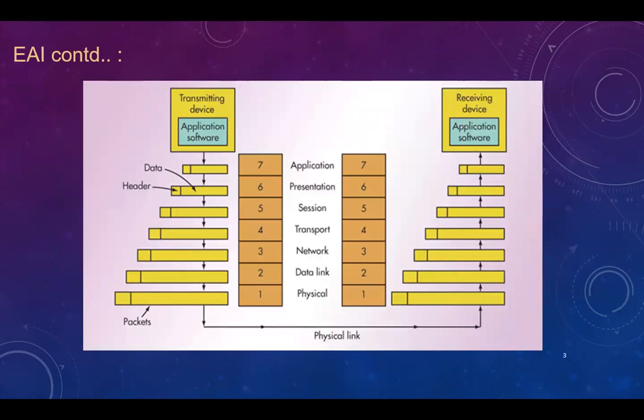Whenever we want to have communication between applications, applications from one end running in one computer have to communicate with applications running in another computer. In that scenario, it will be climbing down these particular layers and then going back up. This happens whenever communication is happening between computers where applications are running in different computers. If applications are running in the same computer, communication happens within the same layer and it would be easier. The main concept of EAI is addressing the kind of communication happening across computers, or in other words, across servers.